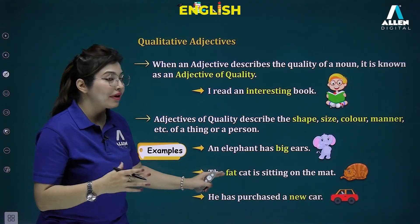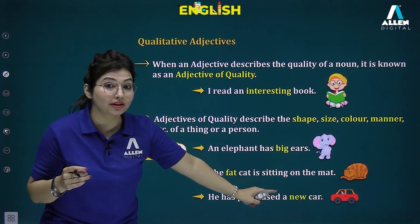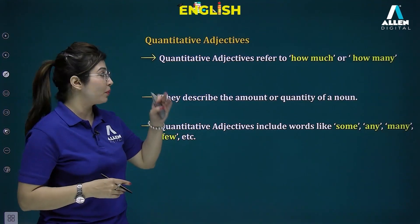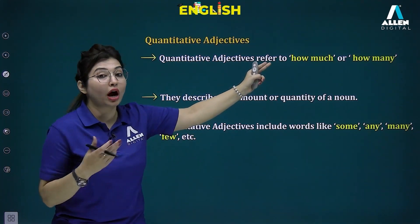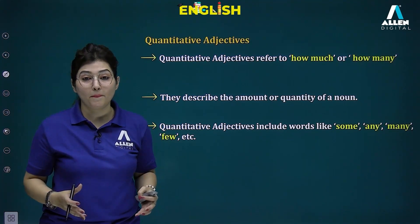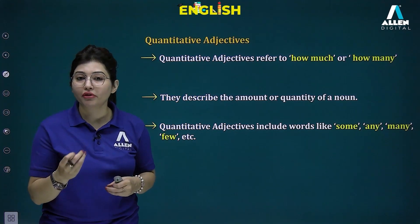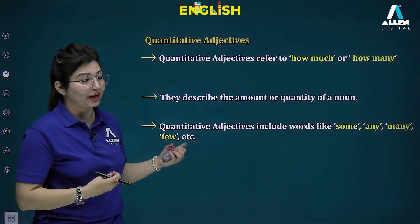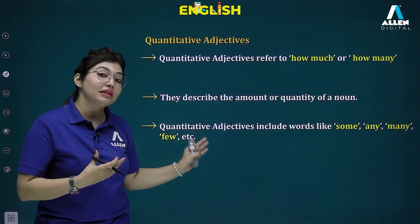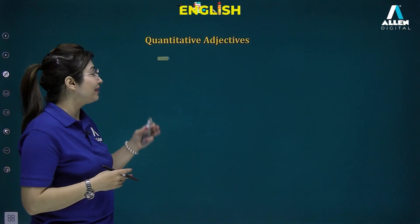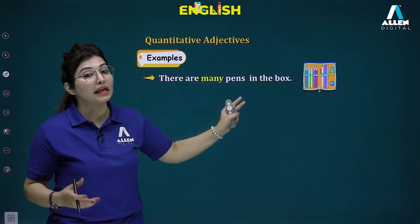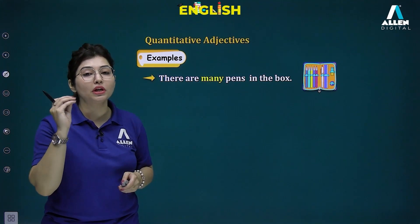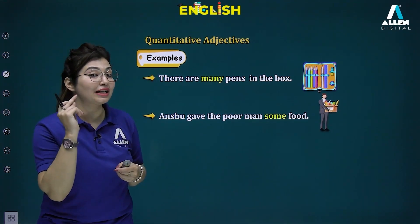Examples of qualitative adjectives: 'an elephant has big ears' — size; 'the fat cat' — appearance; 'he has purchased an old car' — age. Next, quantitative adjectives refer to how much or how many when we do not know the exact number. Words like some, any, many, much, a few, the few, a little, the little represent quantitative adjectives. For example, 'there are many pens in the box' — many is used with countable nouns, while much is used with uncountable nouns.